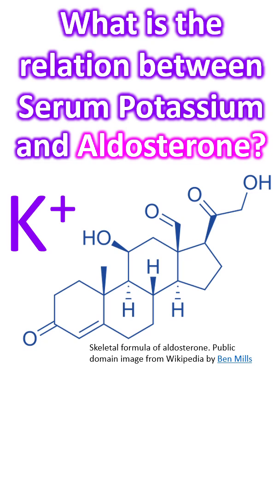It is well known that serum potassium levels come down with increased aldosterone secretion. That is because aldosterone causes potassium excretion and retention of sodium and water. In a reciprocal relationship, alterations in potassium concentrations directly affect aldosterone secretion independent of renin.